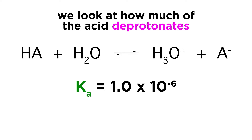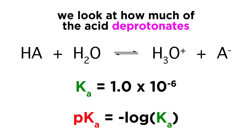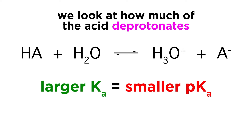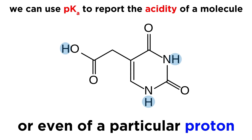In general, Ka values tend to use scientific notation, which can get tedious, so we will quantify acidity using pKa instead. This just means the negative log of the Ka. This takes something like 10 to the negative 6 and turns it into simply the number 6, which is much tidier and more convenient for communication. The larger the Ka, the smaller the resulting pKa, which means that smaller pKa values correlate with greater acidity. pKa values will be the way we report the acidity of a molecule, and eventually even specific hydrogen atoms within a molecule, which will have varying acidities depending on structural factors.